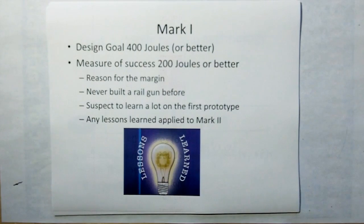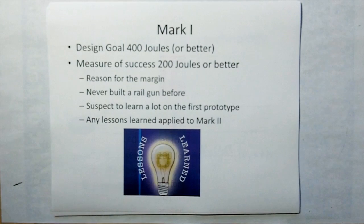Let me make this clear. The design goal is 400 joules at the muzzle. But if we get a muzzle energy of 200 joules or better, I'm going to assume that we're done. That's good enough, 50%. Now the reason for this margin is I've never built a railgun before, so I'm sure there's going to be a lot of learning curve. And if we don't make the 200 joules, there will be a Mark II, and we'll apply what was learned in the Mark I to the Mark II.